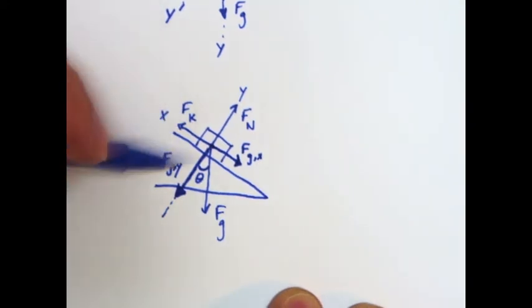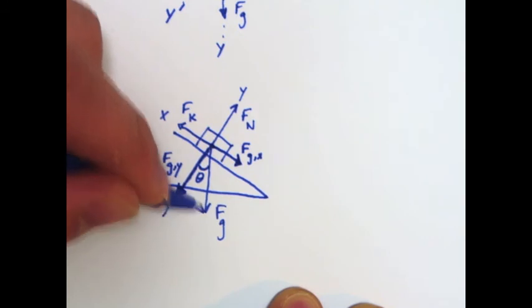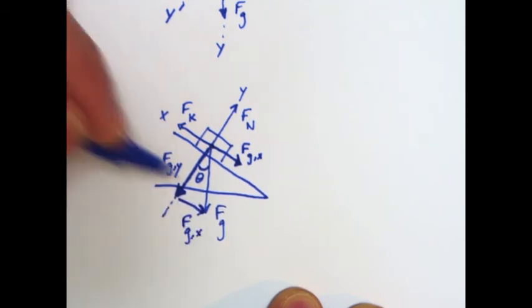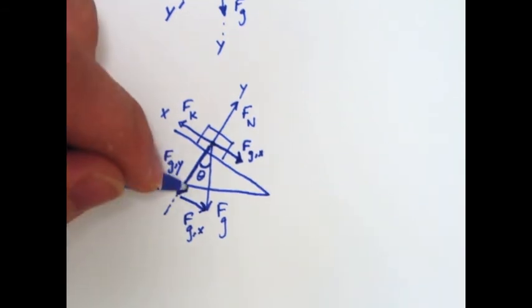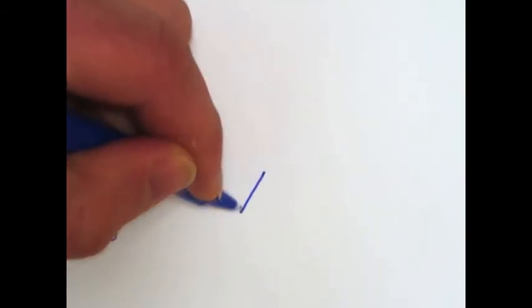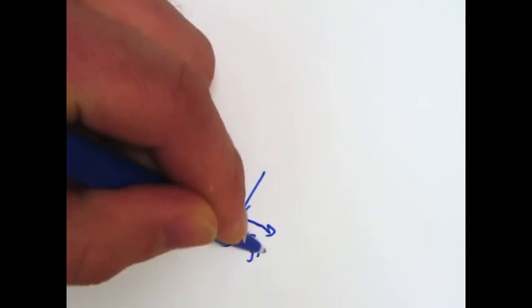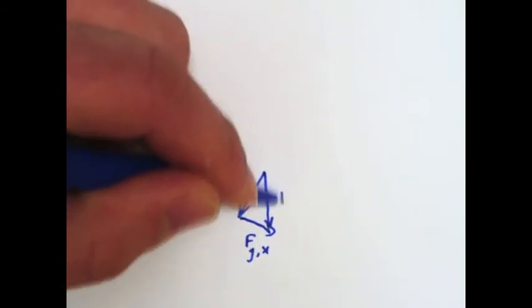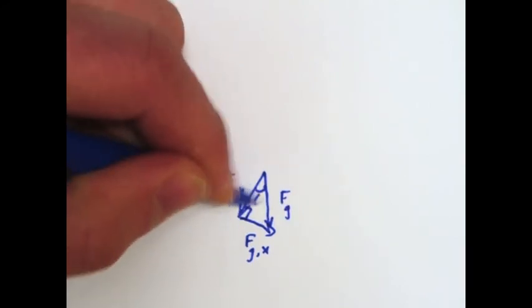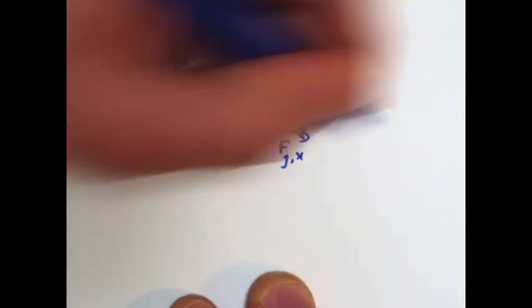Now, what do FGY and FGX equal? Well, I'm going to take my FGX vector here, and I'm going to slide it down. Okay, now I have a right triangle. And let me pull this triangle out. Here I've got FGY. Here I've got FGX. And here I've got FG with my angle right here. Now, I can figure out this is just a regular old right triangle. So I can use my trig functions to solve for FGY and FGX.